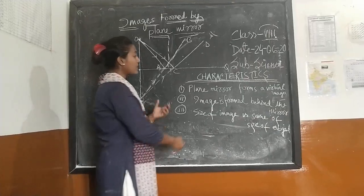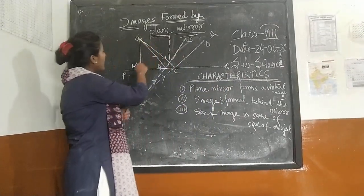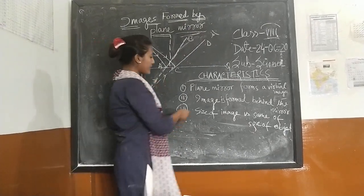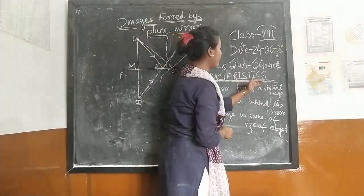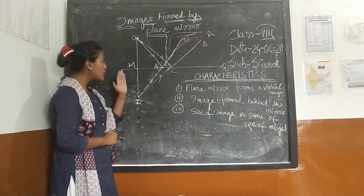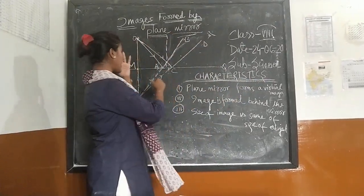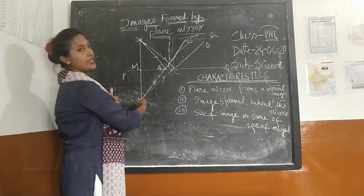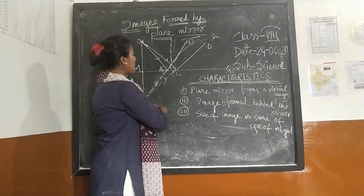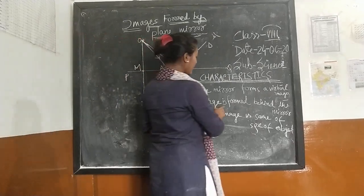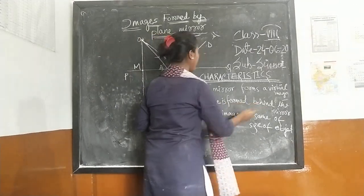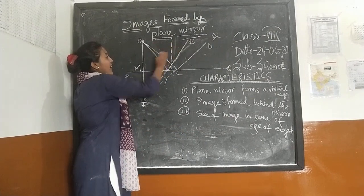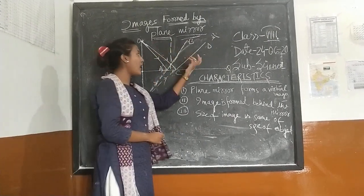Now we will see the characteristics of the image formed by a plane mirror. The first characteristic is that a plane mirror forms a virtual image — meaning the image is formed behind the mirror. We can see this here also, because that track is not possible for human eyes to see.